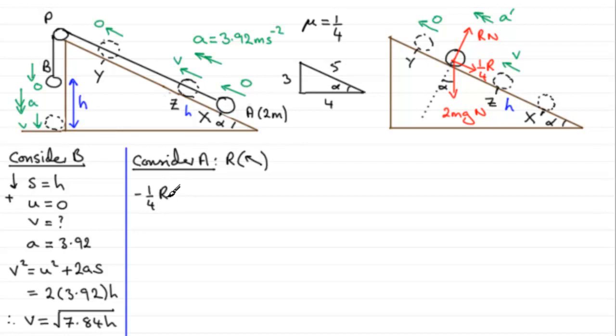And then we've got the component of the weight acting down the plane. Remember the weight can be split into two components, one into the plane and one down the plane. And the one down the plane is going to be 2mg sin alpha. So I'm assuming that you're familiar with that. I went through that in a bit more detail in the previous part of this question, so if you're unsure about that do go back to the previous part.